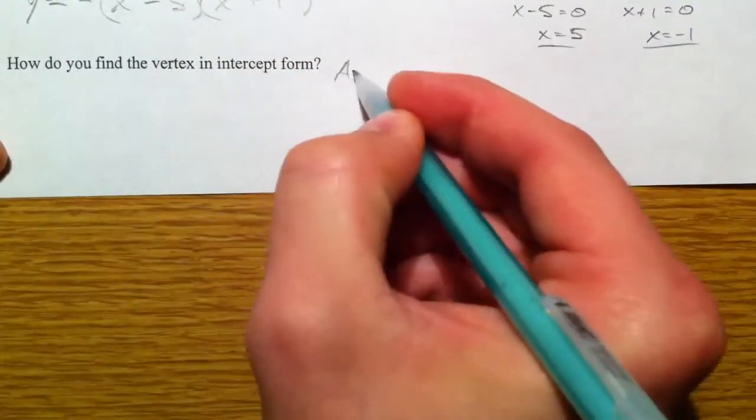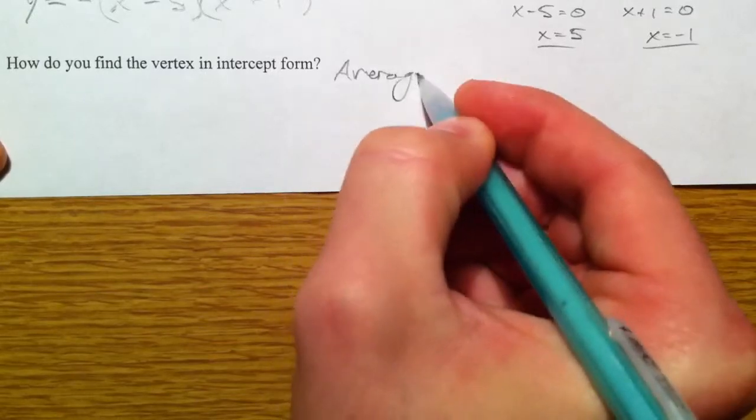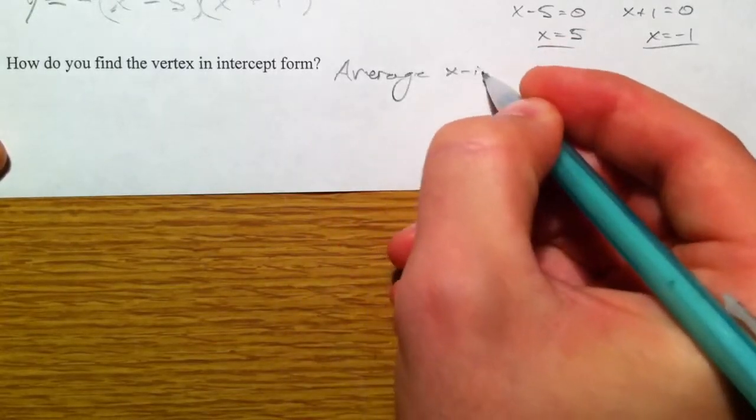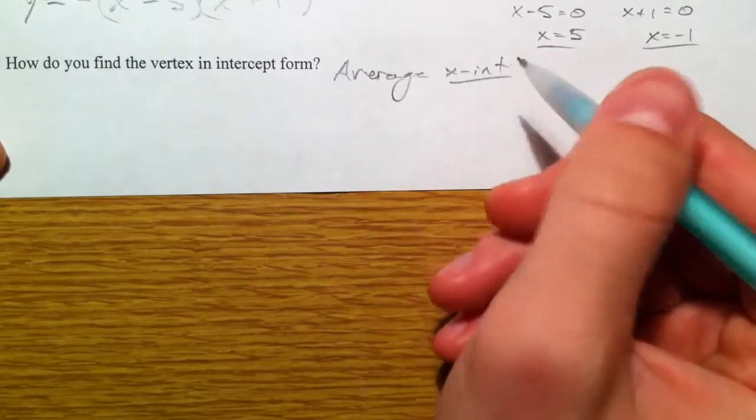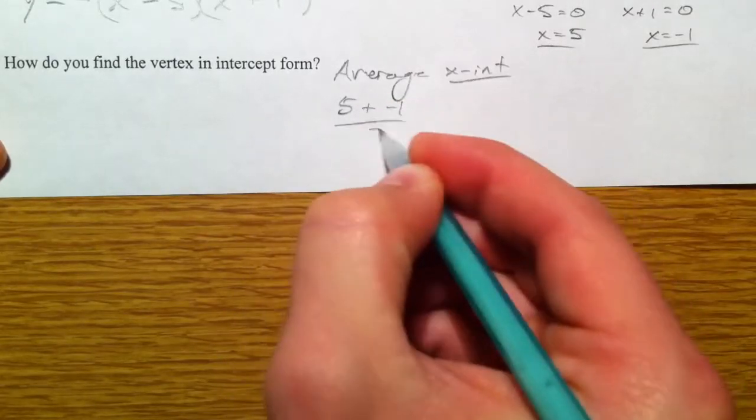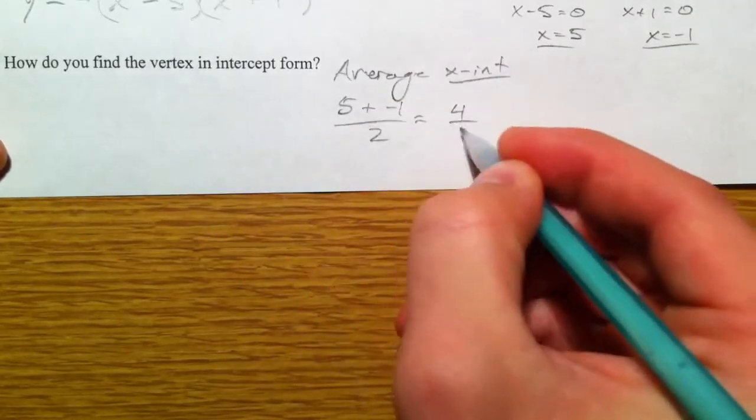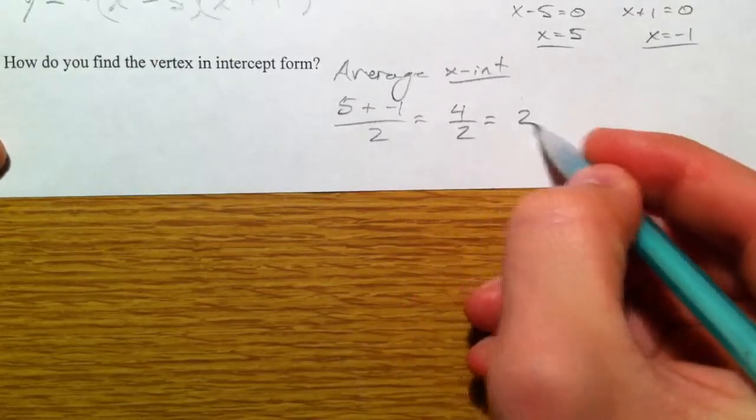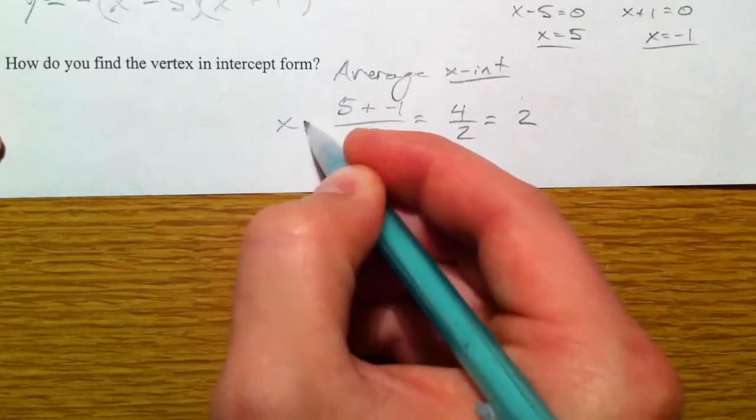So average the x-intercepts. So 5 plus a negative 1 divided by 2 is 4 divided by 2, which is 2. And that's the axis of symmetry.